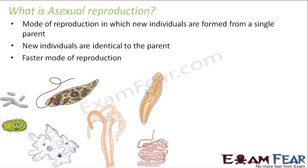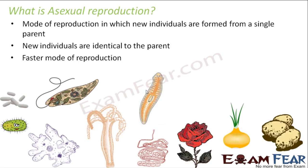Sometimes in a very small period of time, a large number of new organisms are produced, making asexual reproduction definitely a faster mode. Organisms where this occurs include bacteria, amoeba, euglena — unicellular organisms — as well as lower animals like hydra, planaria, and tapeworms, which we discussed in Class 9 in the Diversity in Living Organisms lesson. It is also prevalent in some plants like rose, onion, and potato.